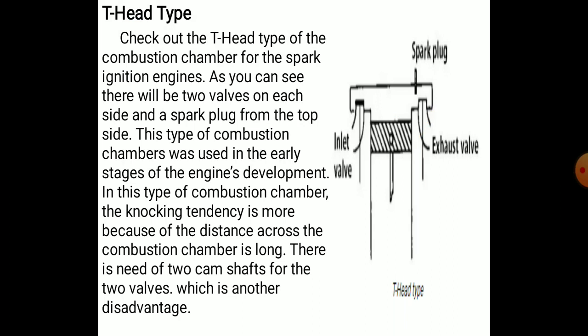The T-head type combustion chamber for SI engines has two valves on each side with the spark plug on the top. This type was used in the early stages of engine development. Its disadvantages include a higher knocking tendency because the distance across the combustion chamber is long, and it requires two camshafts to operate the two valves on either side.